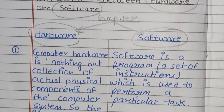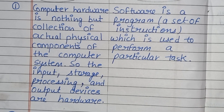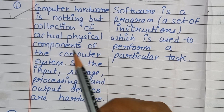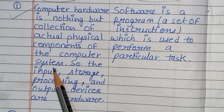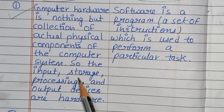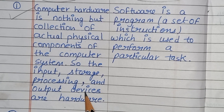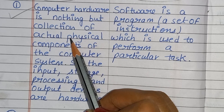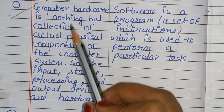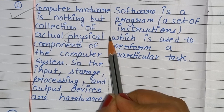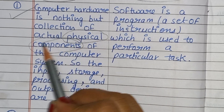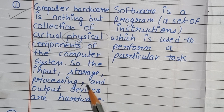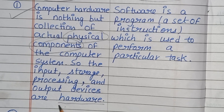First difference: computer hardware is nothing but a collection of actual physical components of the computer system. The input, storage, processing, and output devices are hardware. Computer hardware jo hai, woh physical components ka collection hai — jaisi ki input ho gaya, storage ho gaya, processing ho ghi, output devices ho ghi. Yeh sari hardware hai.